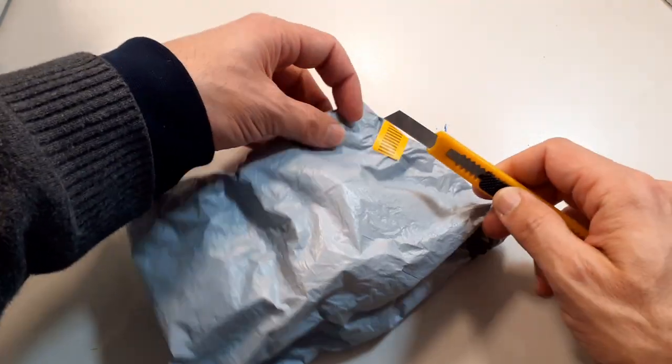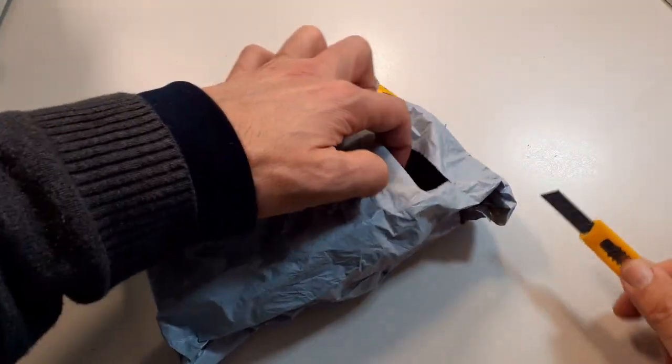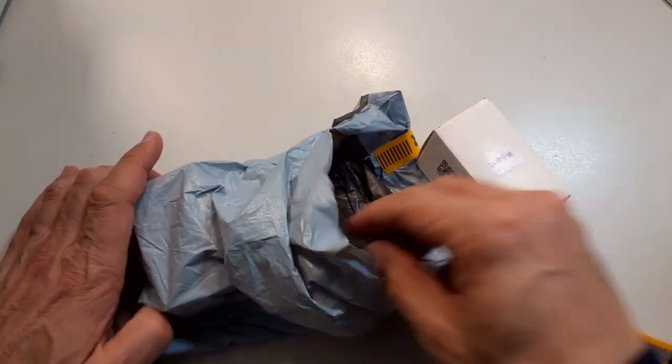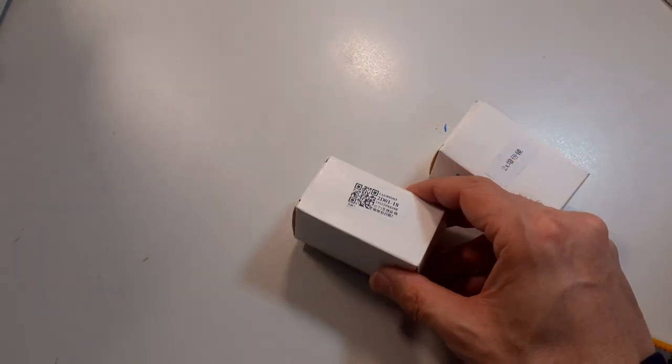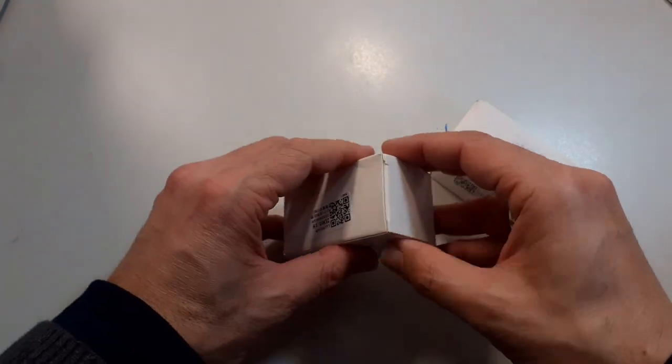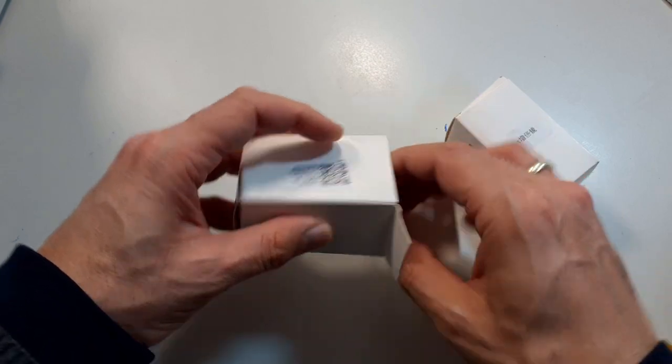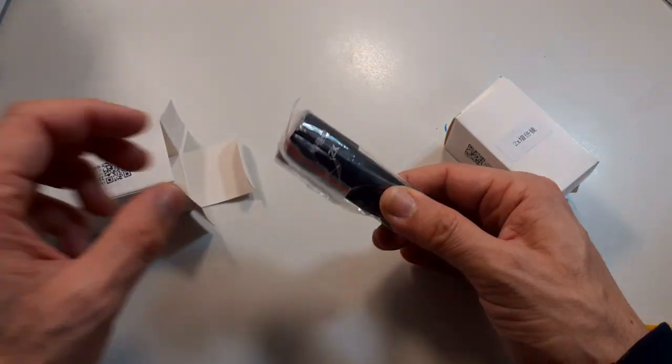This is the parcel that arrived from China. I ordered the Barlow lenses from AliExpress.com. I'm going to talk more about the website later. This is how it arrived - a cardboard box packaged in plastic foil.